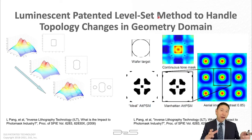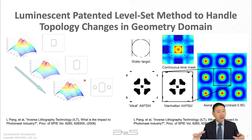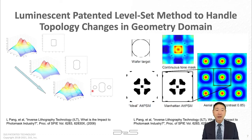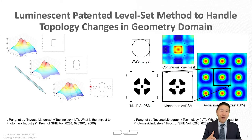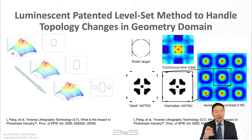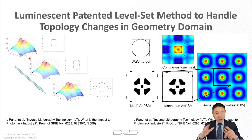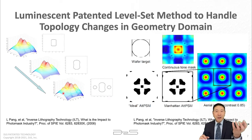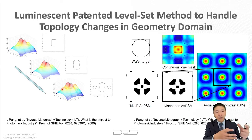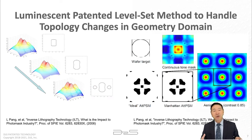When solving the ILT problem, we need to generate assist features. But in two dimensions, when assist features appear the topology changes, which is mathematically very hard to solve. The level set method addresses this: in two dimensions there are topological discontinuities, but if you create a distance function — the distance from a point to the edge — it becomes a three-dimensional smooth function like peaks and valleys. When something pops up and crosses the zero-level set, that becomes a new feature, such as a sub-resolution assist feature. This solves the discontinuity problem in topology.